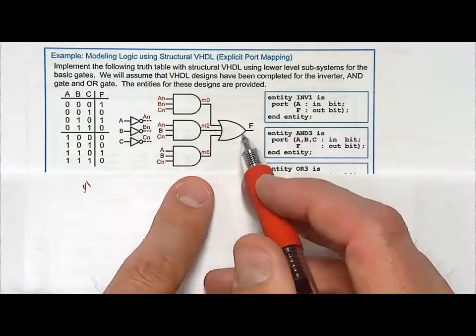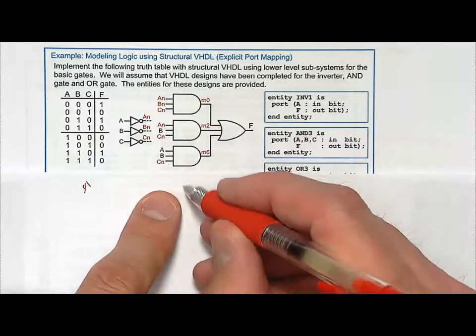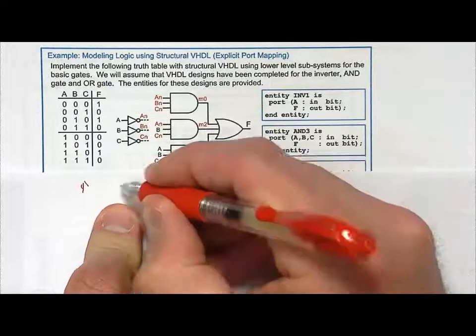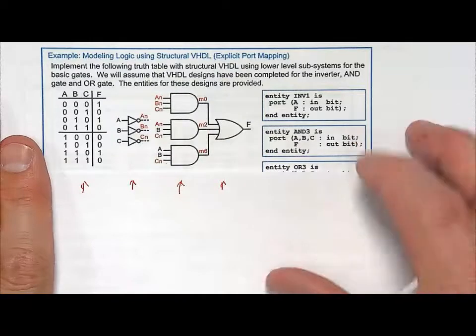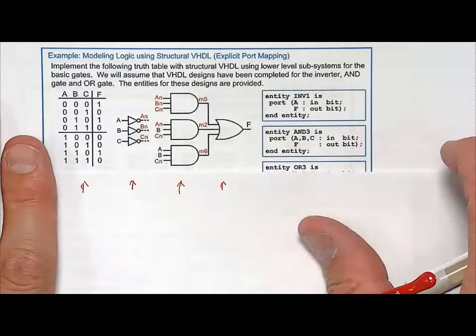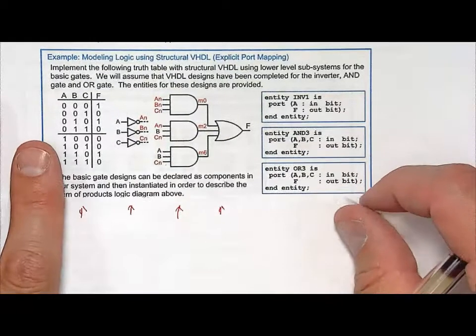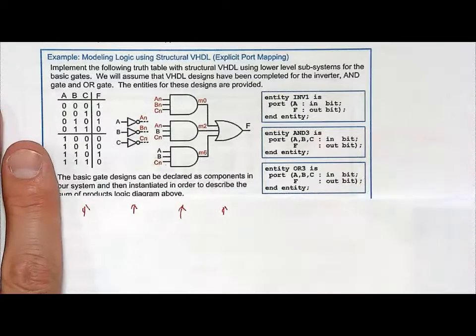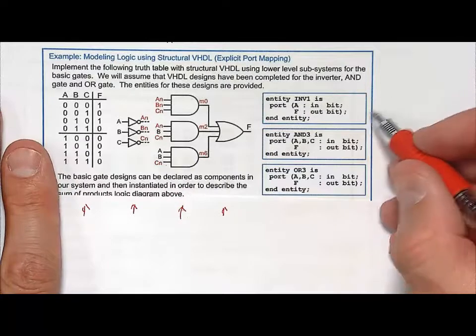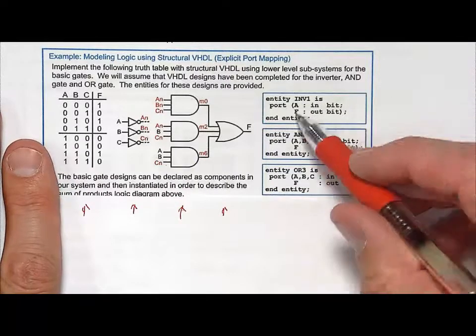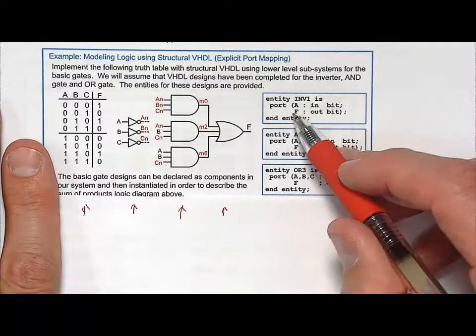ANDs, and an OR, but we're going to do it where instead of using operators for these logic operators, or these logical gates, we're actually going to declare three components that have already been designed. So let's say, for example, that we had three other designs that we either created or we bought from somebody, or somebody else created for us, and these are what the lower-level entities look like. So, for example,